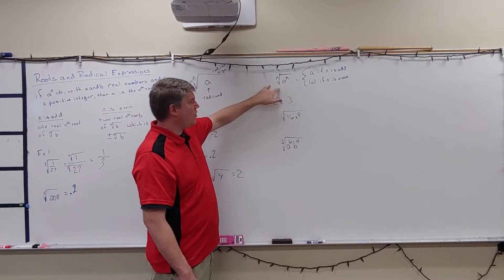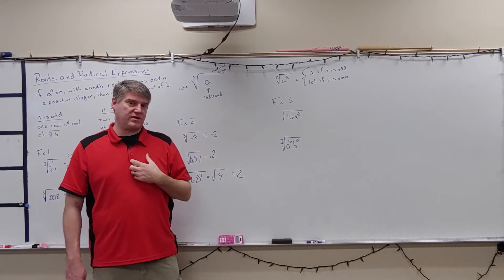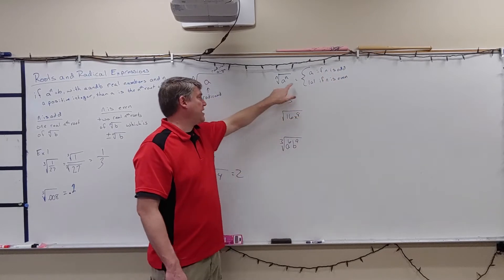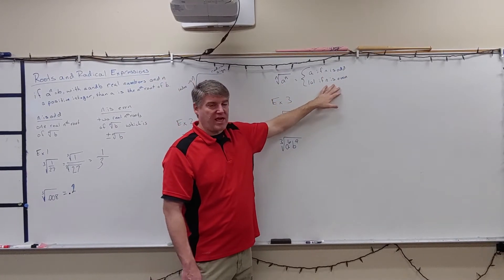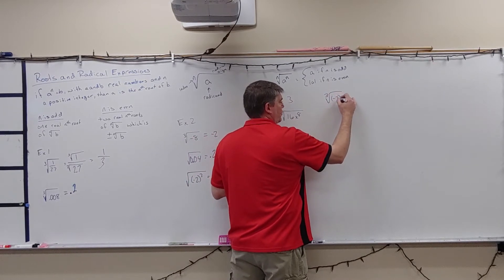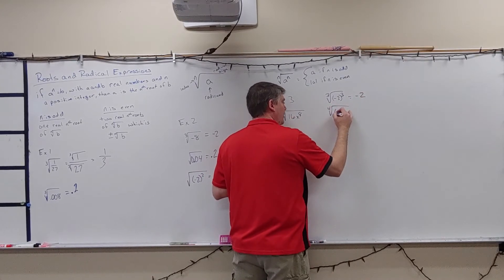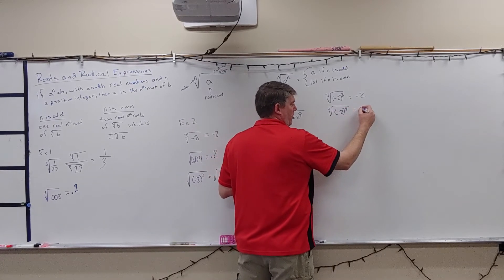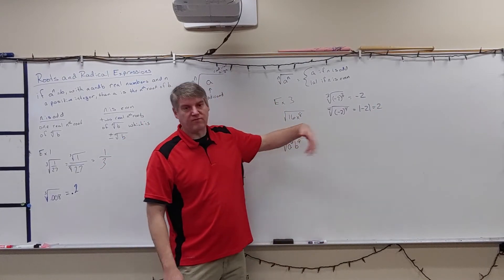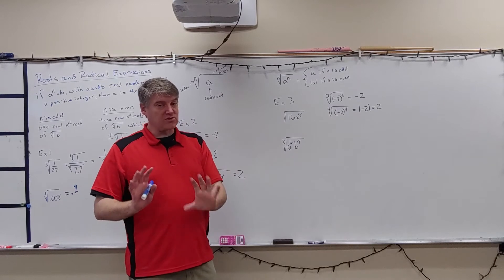What happens when I have the nth root of the nth power? If n is odd, the answer is just a. If n is even, the answer is the absolute value of a. For example, the cube root of negative two cubed is negative two. But the fourth root of negative two to the fourth is the absolute value of negative two, which is two — because negative two to the fourth power is 16, and the fourth root of 16 is two. This is only looking at the principal side.